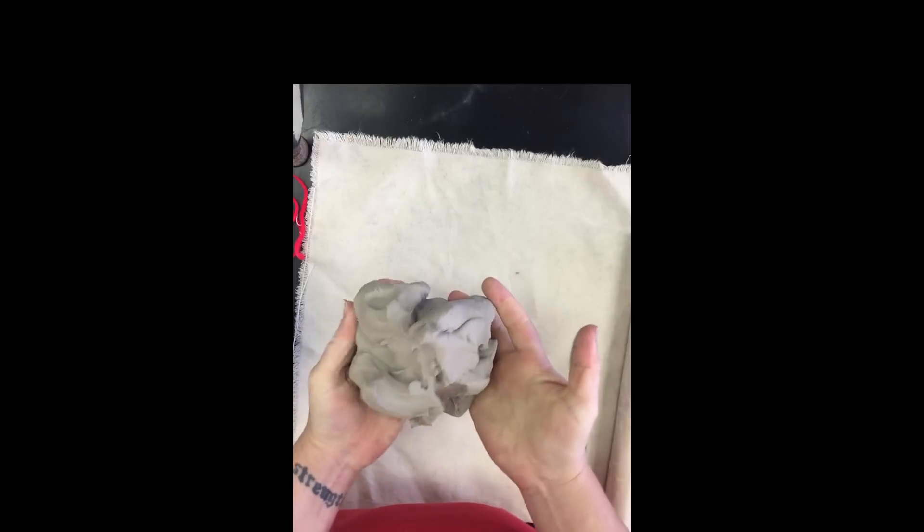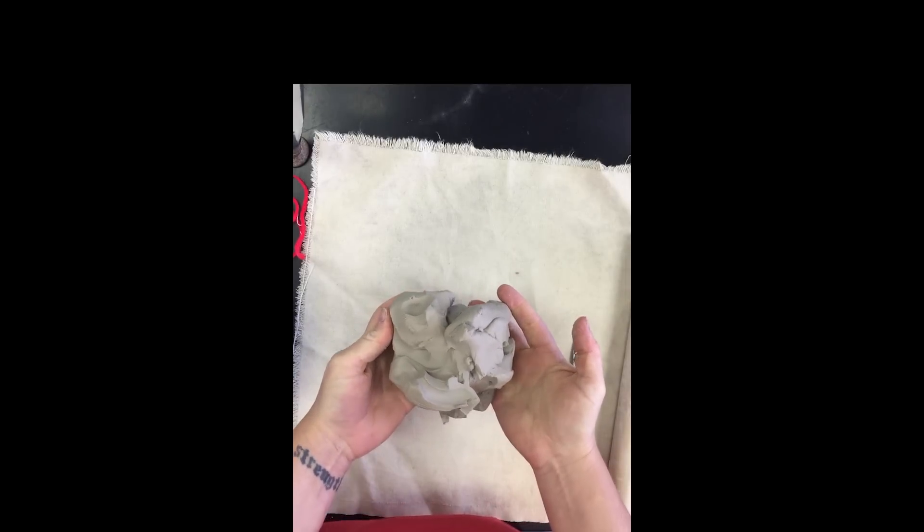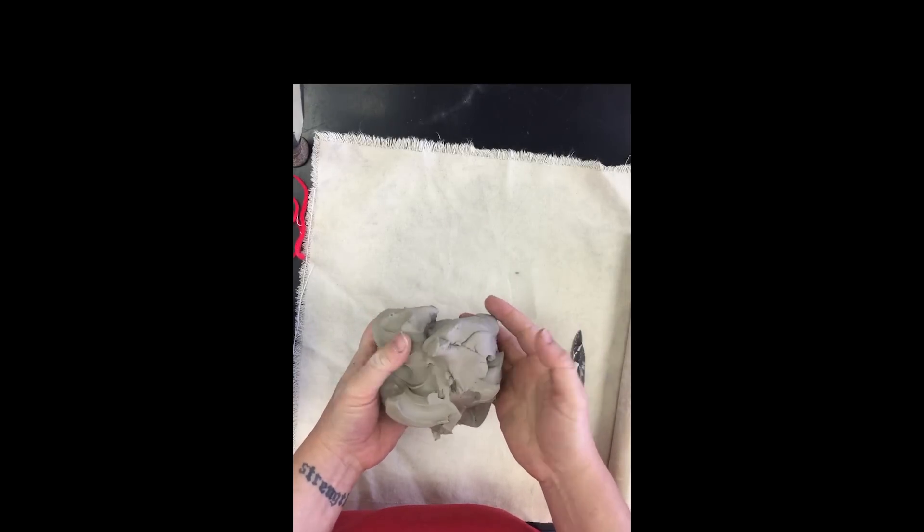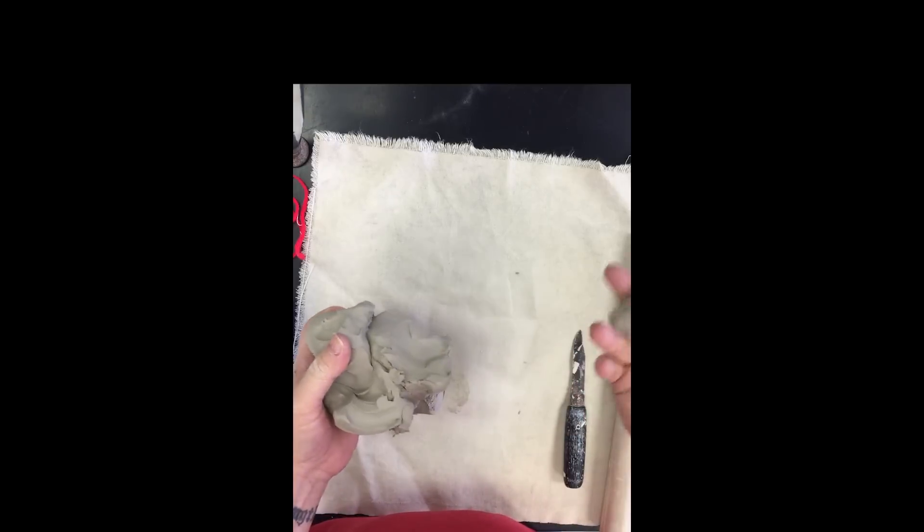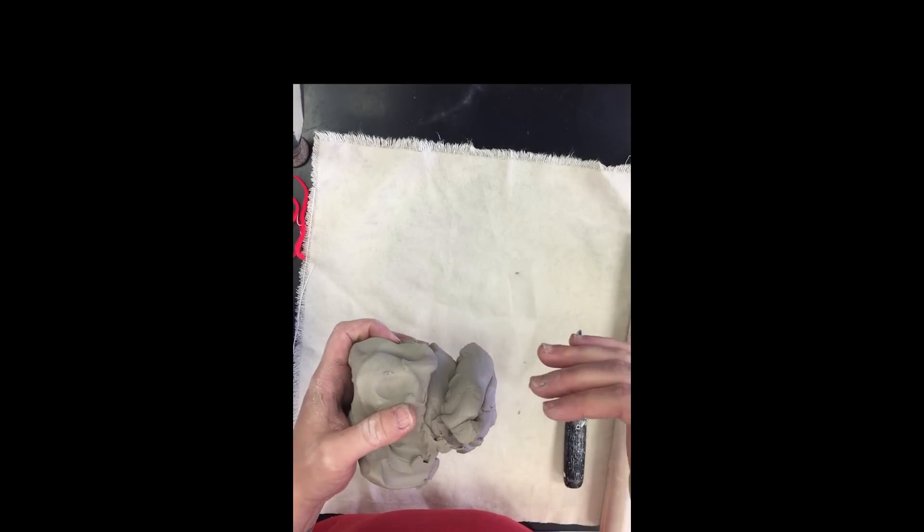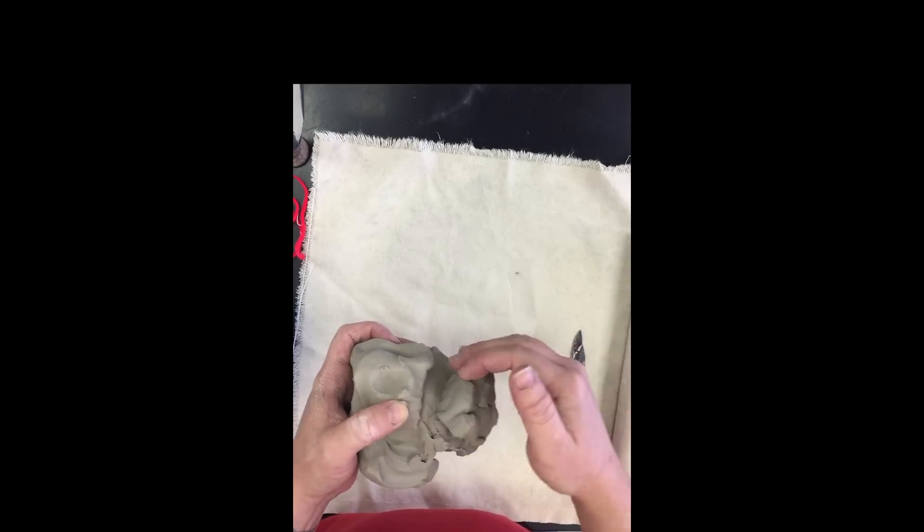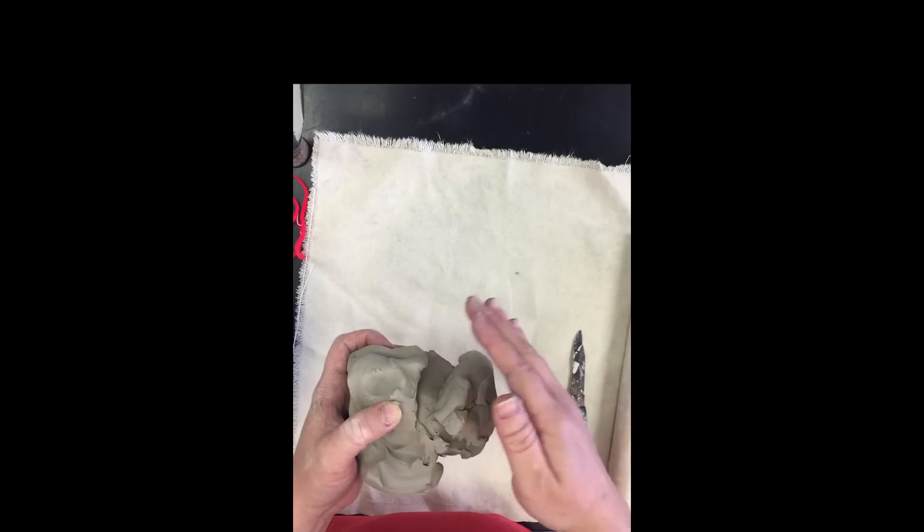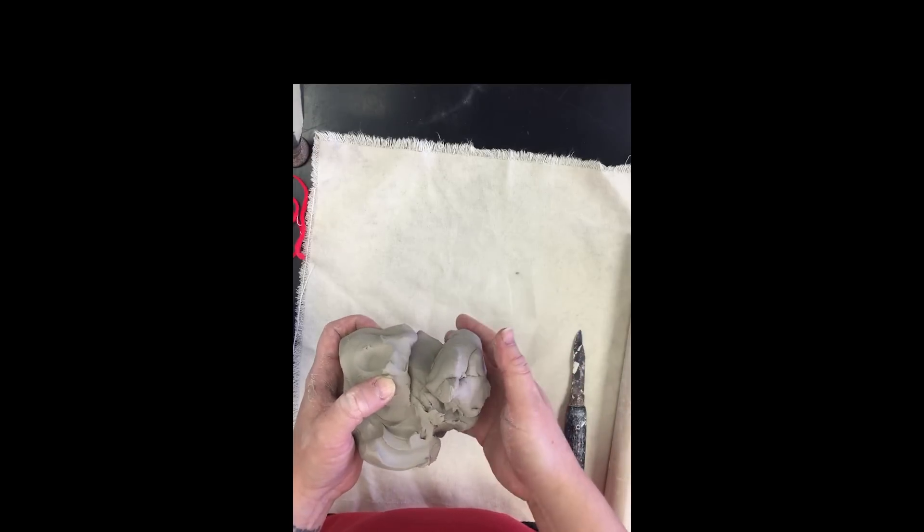But if you get a piece that looks like it's been put together and mangled or whatever, something along these lines, you are going to want to wedge it because what happens is you have two pieces of clay or more that have been put together and now you have air pockets in between them.